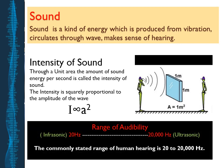What is the range of audibility? Every human being and animal in this universe has its own range of audibility. As human beings, our range of audibility is from 20 Hz to 20,000 Hz — within this range we can hear sound. A frequency less than 20 Hz is called infrasonic sound, and a frequency more than 20,000 Hz is called ultrasonic sound. The commonly stated range of human hearing is 20 to 20,000 Hz.